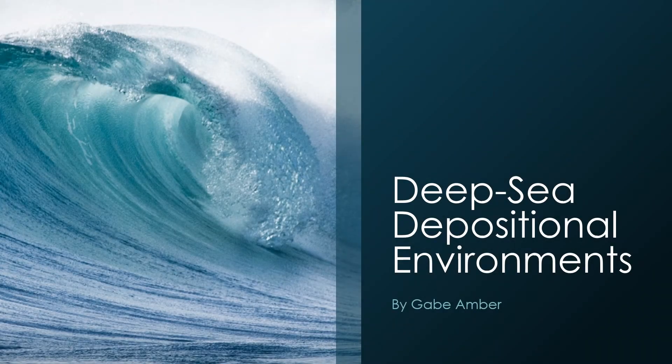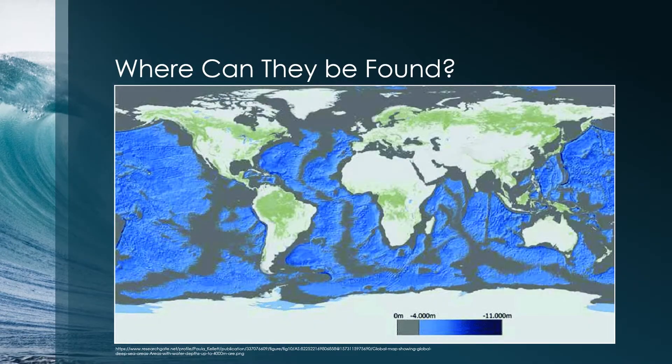Have you ever wondered what happens in the deep ocean and what happens to all the animals and sediment there? Well today we're going to try to answer that question. So where can these zones be located? Well, as you can see from this map, all of the blue areas technically qualify as deep sea marine environments. However, most of the important parts will be a darker blue and are typically around the borders of continents.